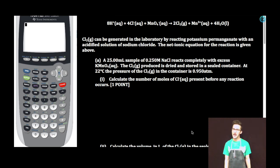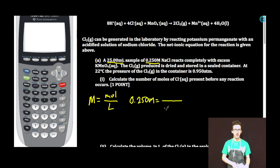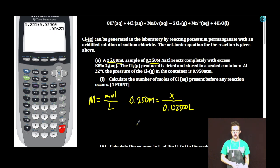Subpart I. Calculate the number of moles of chloride ion present before any reaction occurs. We are given a volume and a concentration of sodium chloride, the source of our chloride ion. I'm going to use my molarity equation — plug in my molarity, plug in my volume in liters, and solve for x. 0.250 times 0.02500 gives 0.00625 moles chloride ion.